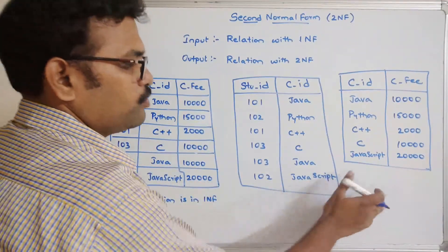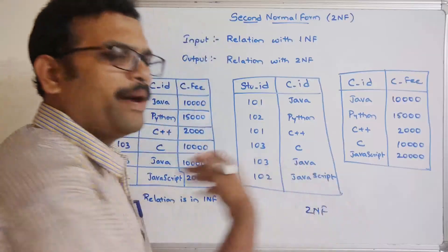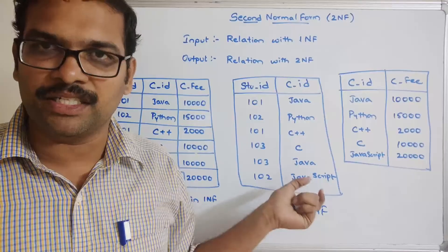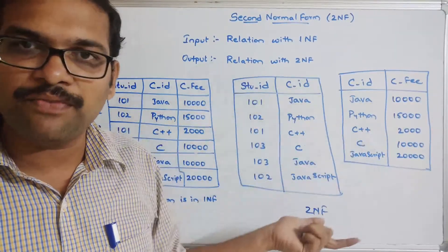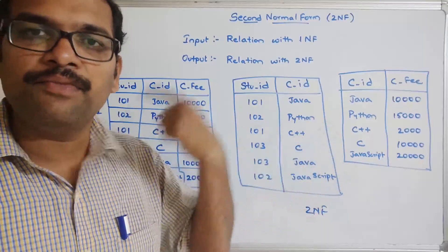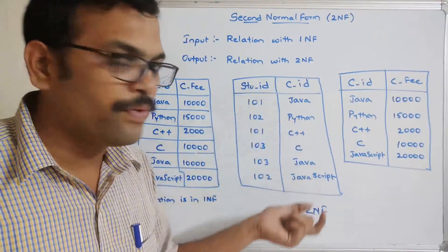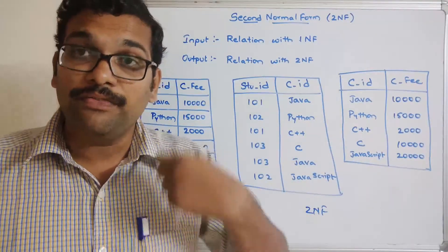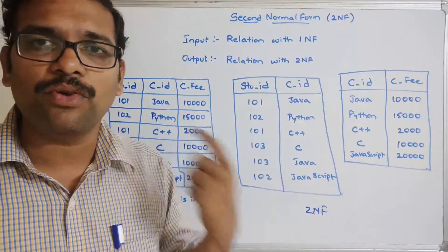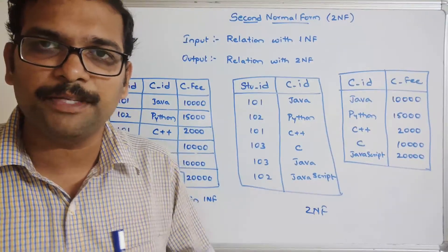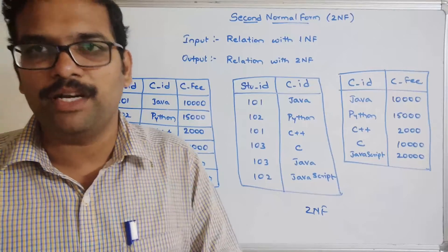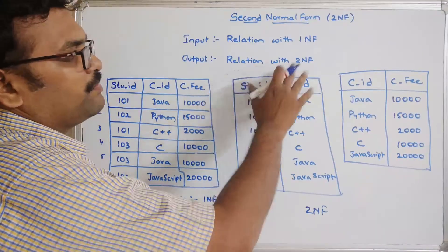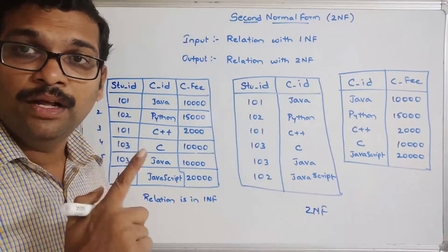These two relations are now in 2NF because there are no partial dependencies. If there are more attributes, you can again check for 1NF and 2NF on the sub-relations. If any partial functional dependencies still exist, decompose further into smaller sub-relations. This is how we satisfy a relation with 2NF: first the relation should be in 1NF, and second, it should not have any partial functional dependencies.